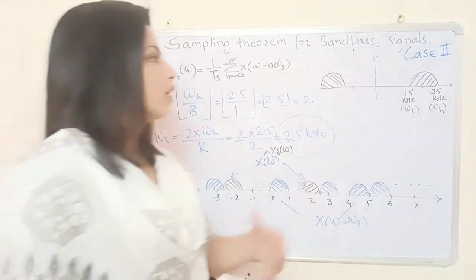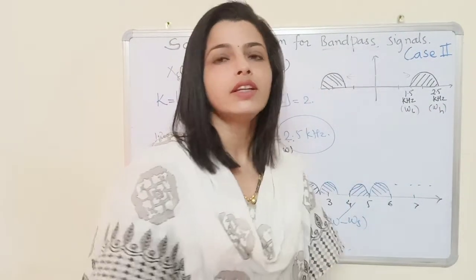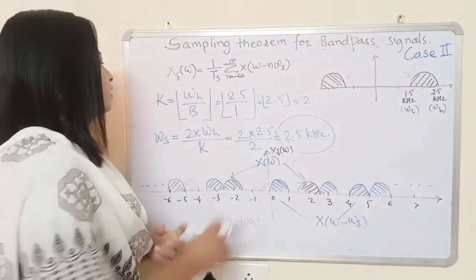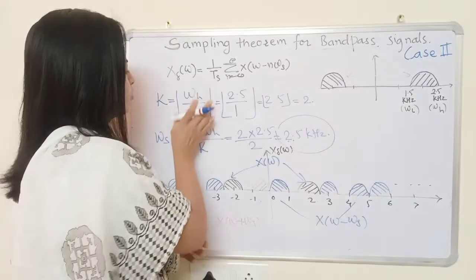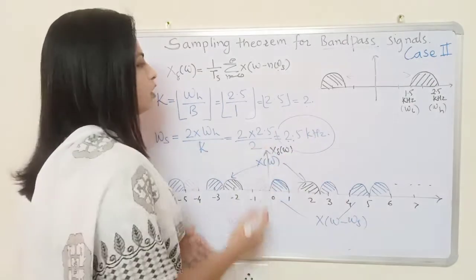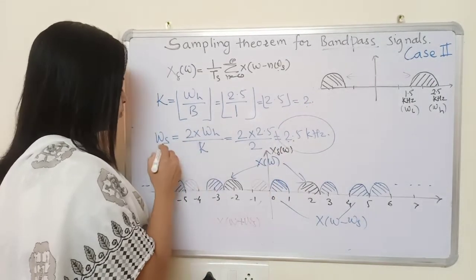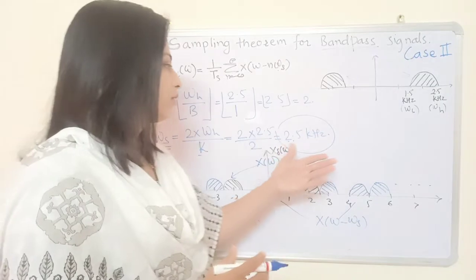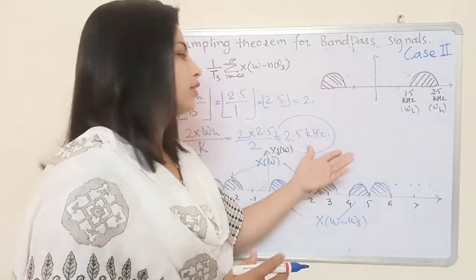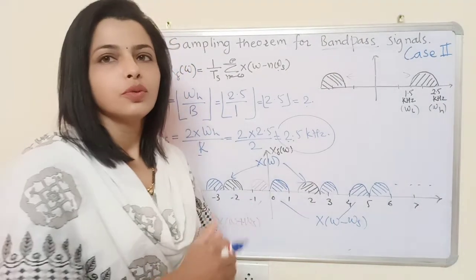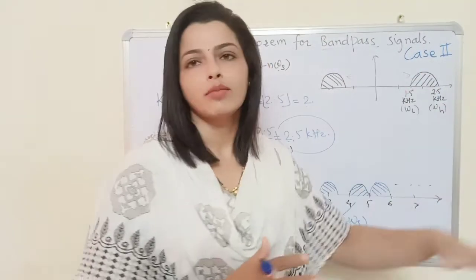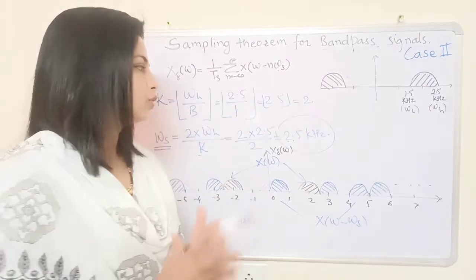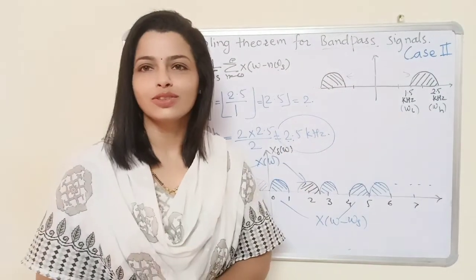Our main goal was to find the sampling frequency when the higher frequency is not an integer multiple of the bandwidth. We find the number k by rounding down the ratio of the higher frequency to the bandwidth, then compute the sampling frequency using the formula: 2 times the higher frequency divided by k. Here we are successfully sampling at 2.5 kHz, which is much lower compared to the regular Nyquist sampling frequency of 5 kHz for this signal. I hope you have understood this — with this we have covered Case 2. Thank you.